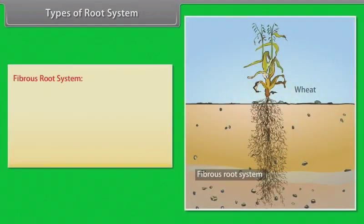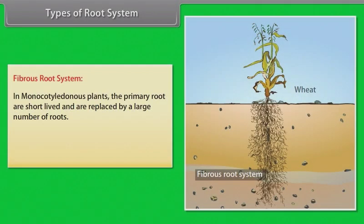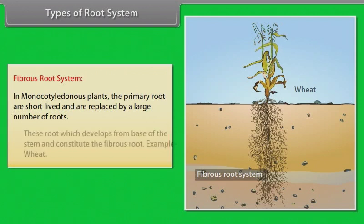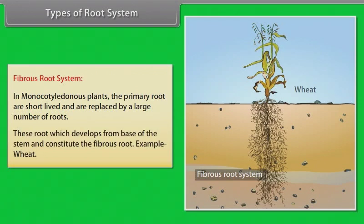Fibrous root system: In monocotyledonous plants, the primary roots are short-lived and are replaced by a large number of roots. These roots, which develop from the base of the stem, constitute the fibrous root. Example: weed.